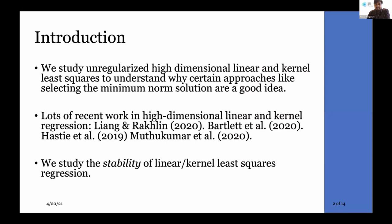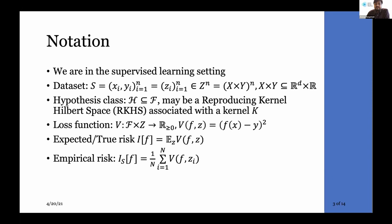The motivation for this work is similar to the workshop's: understanding how generalization happens in high-dimensional over-parameterized learning problems with far more parameters than training samples. We study unregularized high-dimensional linear and kernel least squares problems, trying to understand why approaches like selecting the minimum norm solution are a good idea. We approach this from the perspective of algorithmic stability.